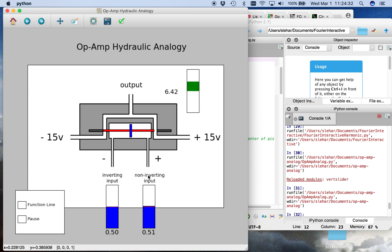Imagine these as hydraulic pressures that go to a cylinder with a piston in it. If the pressure of the non-inverting input is greater than the inverting input, it slams over to one side, and if it's the other way, then it slams over to the other side.